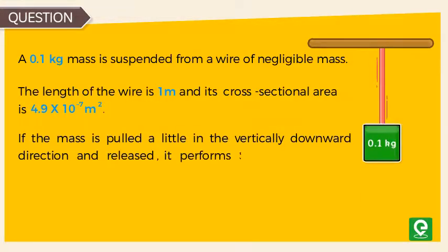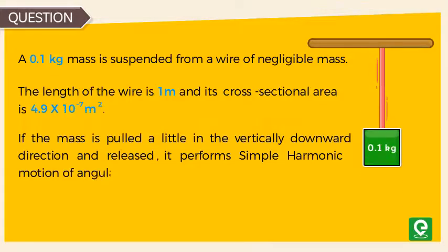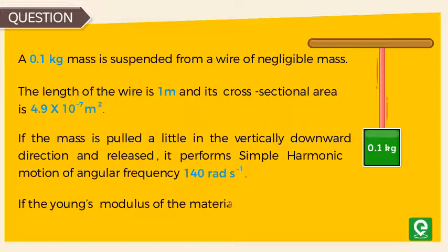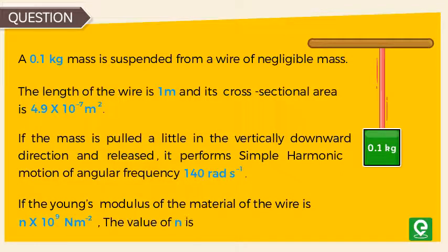If the mass is pulled a little in the vertically downward direction and released, it performs simple harmonic motion of angular frequency 140 radian per second. If the Young's modulus of the material of the wire is n × 10^9 newton meter per square, the value of n is? This question was asked in IIT-JEE 2010 exam.